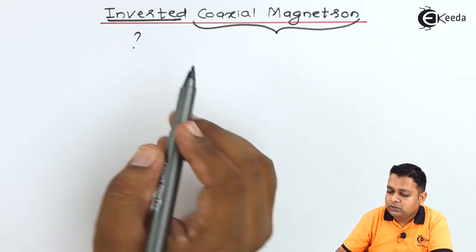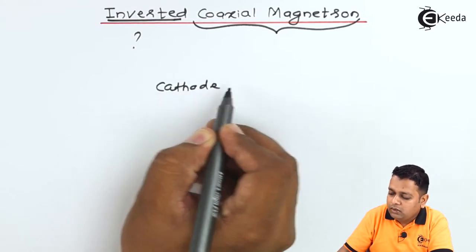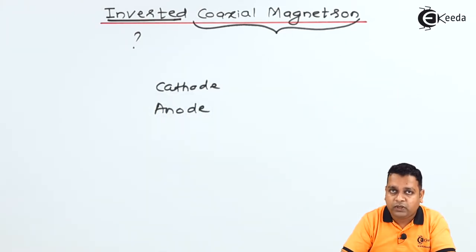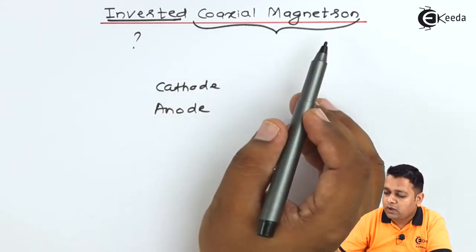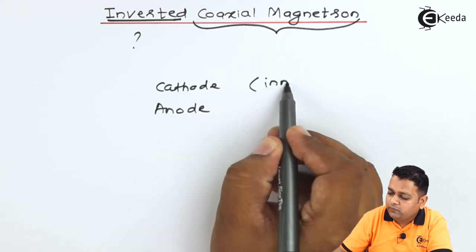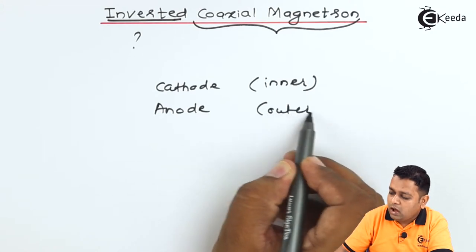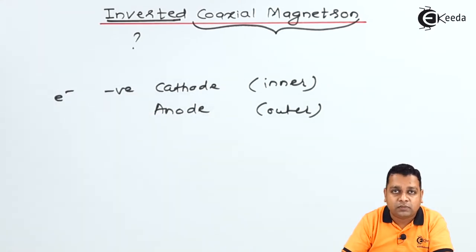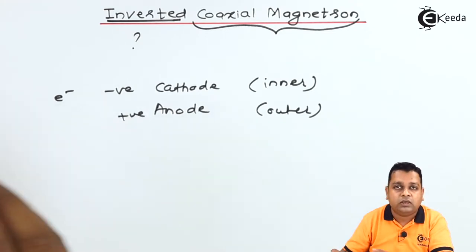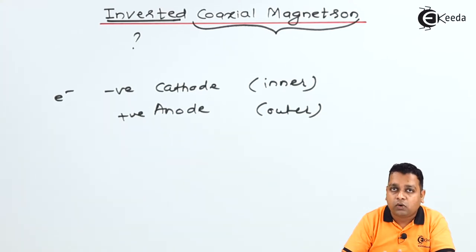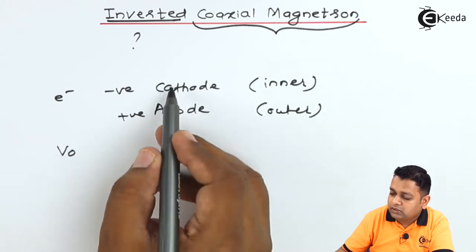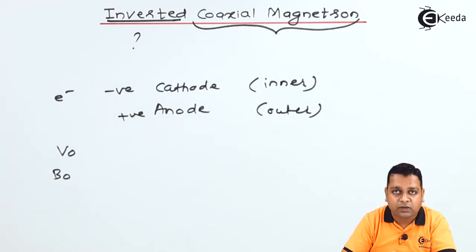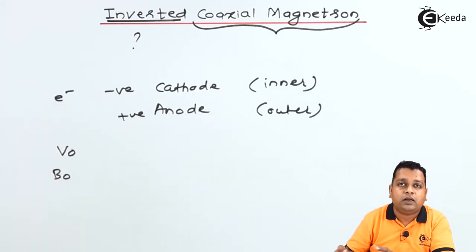So what is getting inverted here? The two important electrodes are cathode and anode, and their positions are changed. In the conventional or coaxial magnetron, the cathode is the inner electrode and the anode is the outer electrode. The cathode is provided with negative potential generating free electrons, which are focused toward the positively charged anode. For magnetron oscillations, we control the DC potential between these two electrodes and the magnetic flux density perpendicular to the electric field.